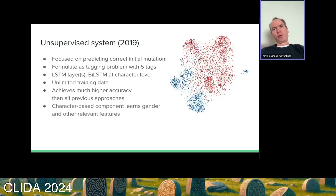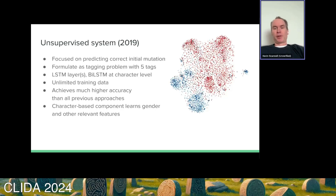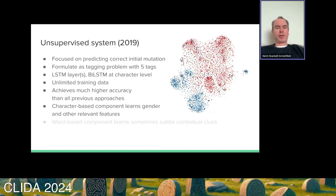The character component — where you're looking at the spelling of words — gives you information about, for example, whether certain nouns look masculine or feminine. I assume that's true in Welsh as well. Even if it's a word that's never been seen in training, that can give you information about what the right mutation is. And then the word-based component can learn subtle cues from broader context.